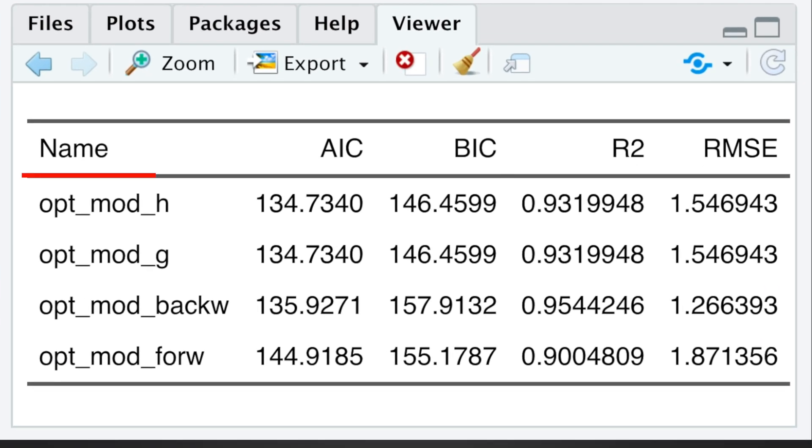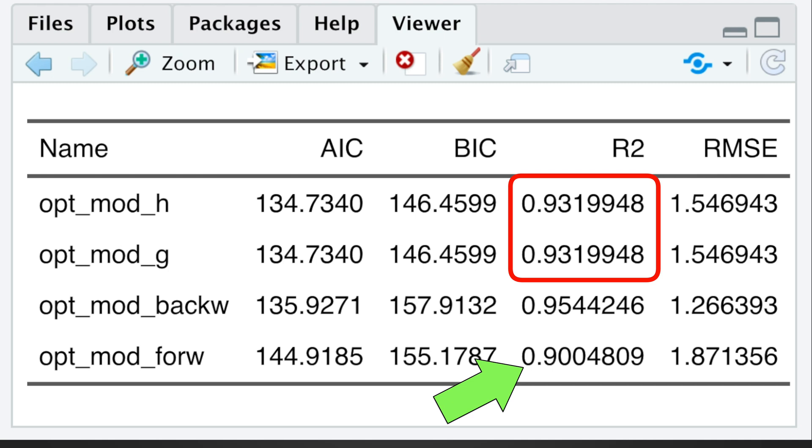As you can see, glmulti approach produces lower AIC and much lower BIC information criteria. And interestingly enough, the R-squared produced by glmulti is right in between the R-squareds of forwards and backwards selections, suggesting that glmulti models are neither underfitted nor overfitted.